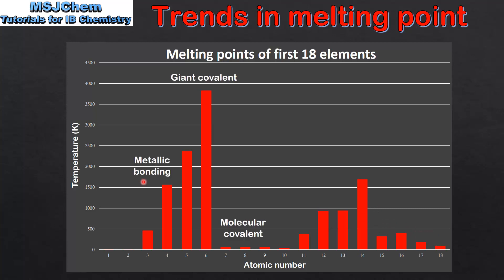Next we look at the type of structure and bonding for each element. Lithium and beryllium both have metallic bonding. Carbon has a giant covalent structure. And the remaining elements — nitrogen, oxygen and fluorine — have molecular covalent structures.